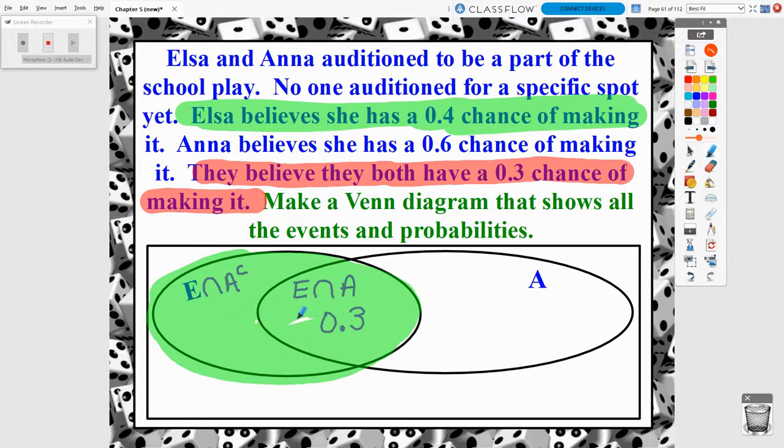How much of the 40% have we already talked about? We've already talked about 30% of the 40%. 30% out of the 40% of the time, Elsa and Anna make it. So how much of this 40% is left over for just Elsa making it, but Anna does not make it? This would be the leftover 10%. So altogether, if we took 10% and 30%, that represents that 40% chance that Elsa makes it.